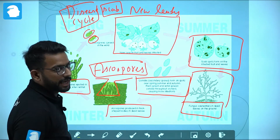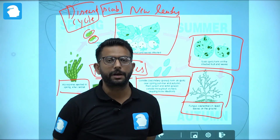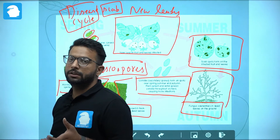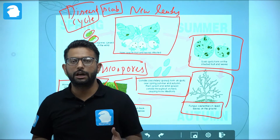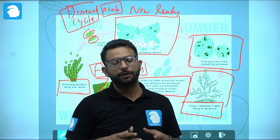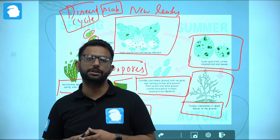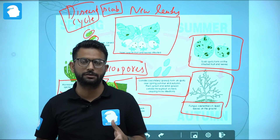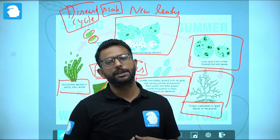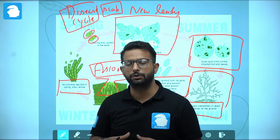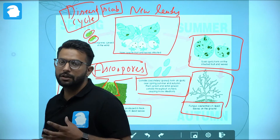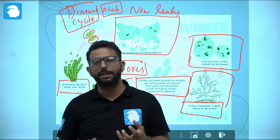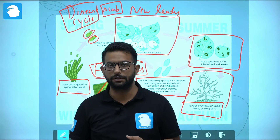To summarize the disease cycle of apple scab caused by Venturia inaequalis: the fungus overwinters in fallen leaves on the ground. Under favorable conditions, ascospores are produced in flask-shaped structures, spread via wind and rain splashes, and cause scabby appearance on the surface of fruits and leaves.